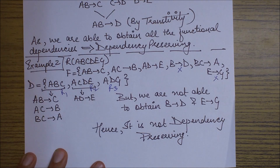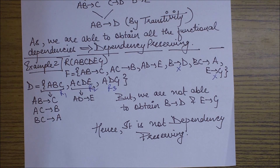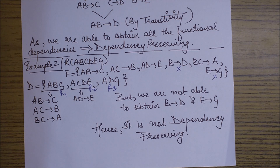That means this example is of a non-dependency preserving decomposition. This was all about how to check a dependency preserving decomposition. I hope this session proved to be an informative one. If you like the video, please like it and subscribe for more upcoming videos. Thank you, friends.